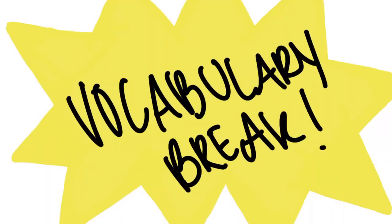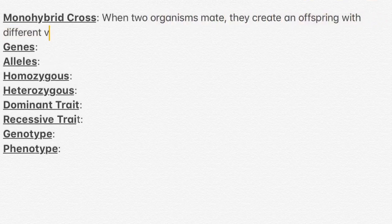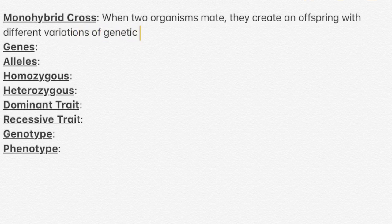Wait, time for a vocabulary break. To clarify, a monohybrid cross is when two organisms mate and create offspring with different variations of genetic chromosomes, resulting sometimes in different physical attributes.